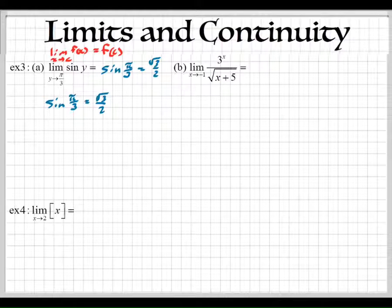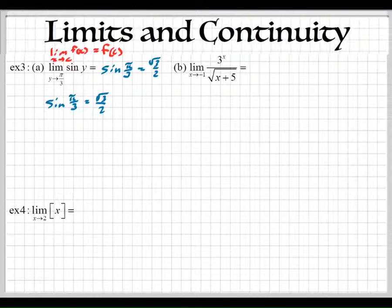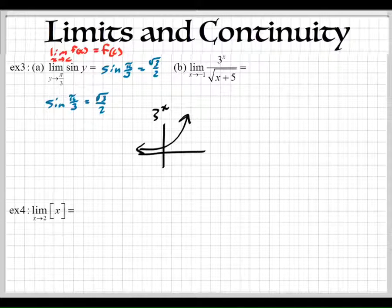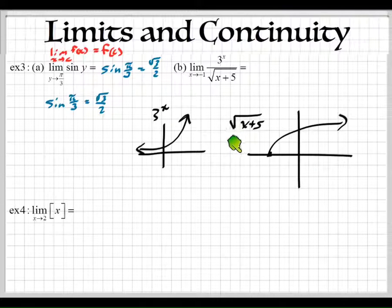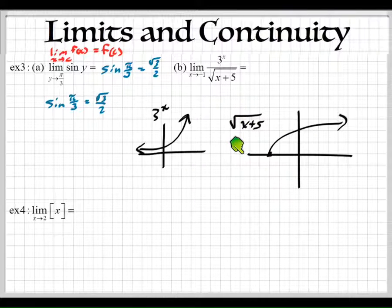Can we do that over here? The question you have to ask yourself is: is this continuous at negative 1? You have to think about all these graphs — the 3^x graph. What does that graph look like? Is it discontinuous anywhere? Nope, it's not discontinuous anywhere. Then we have this radical on the bottom. Do you know what the square root function looks like? Is it discontinuous anywhere? Well, there's no jump, but you definitely have numbers you can't plug in. If I said what's the limit as we approach negative 7, the function doesn't even exist right there.